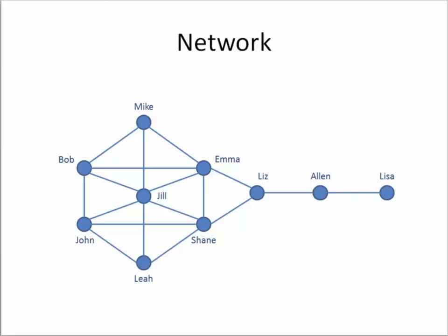How can we determine what is the level of connectivity of this network? For this type of analysis, we can use two individual measures. The first measure helps us determine to what extent each individual node in the network can easily communicate with any other node. For that, we are going to use the network measure called diameter.